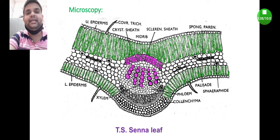So Senna is an example of ISO bilateral leaf. Now coming to the midrib section, the midrib section consists of the vascular bundle which consists of the alternative arrangement of xylem and phloem parenchyma.